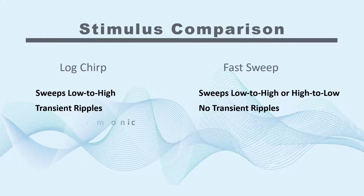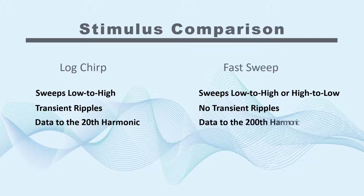A logchirp only provides data up to the 20th harmonic, while a fast sweep can be set to measure up to the 200th harmonic, which can help identify THD issues that might be masked by the second and third harmonics in a result.